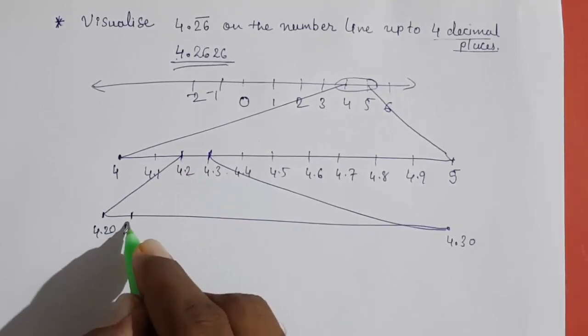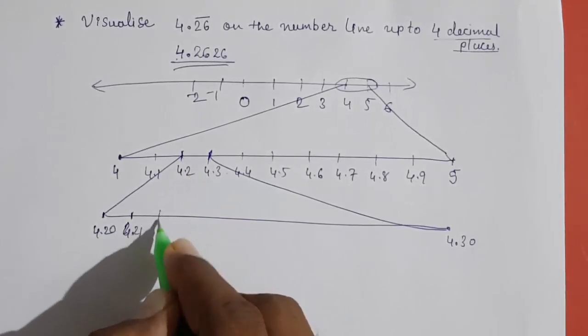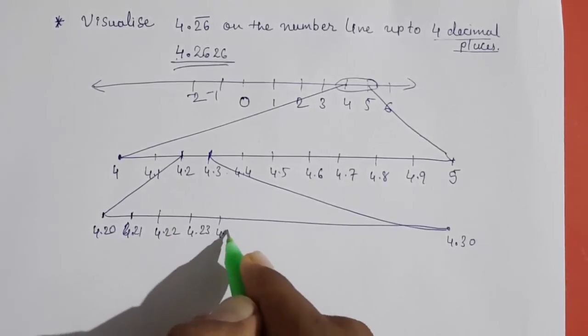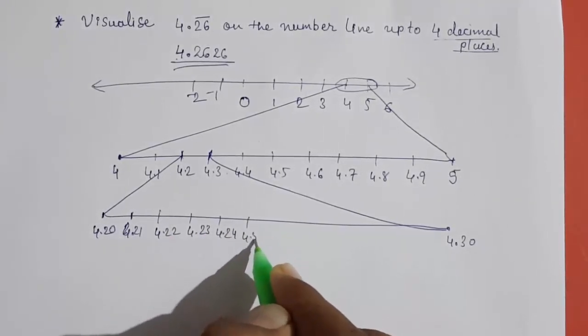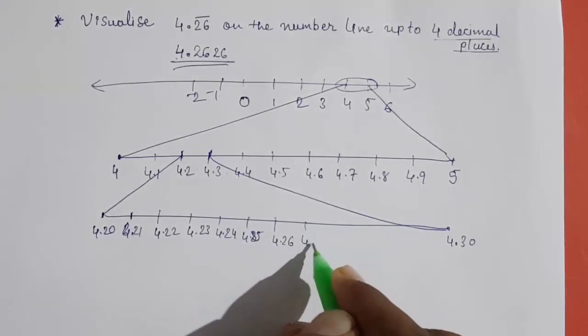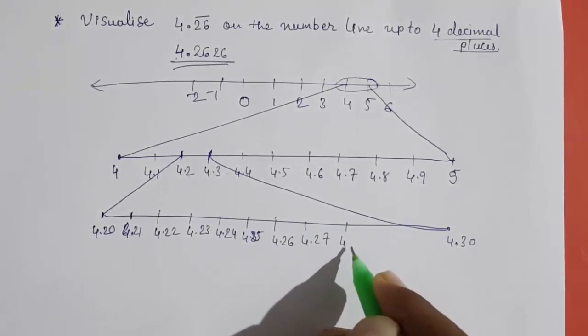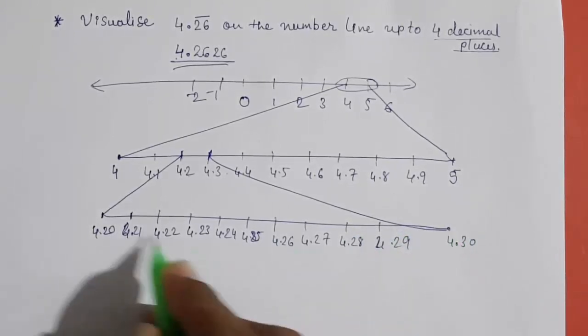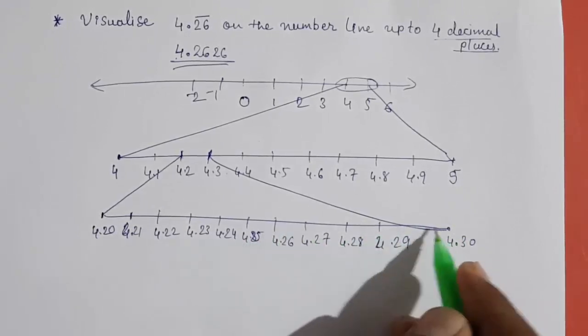So 4.21, 4.22, 4.23, 4.24, 4.25, 4.26, 4.27, 4.28, 4.29. I'm doing it roughly, so the spacing may not be exact.